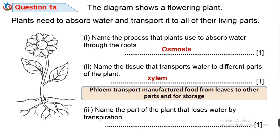Question 1a3: Name the part of the plant that loses water by transpiration. Water is lost from the leaves of a plant through the stomata. It is good to also remember the other function of the stomata — it is also the place where gaseous exchange takes place. Plants take in carbon dioxide, and the stomata give out oxygen through respiration and water by transpiration.